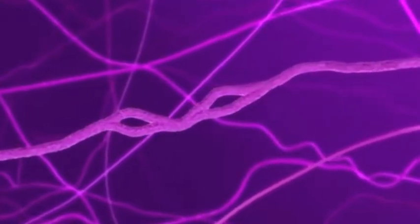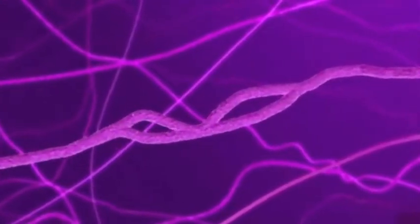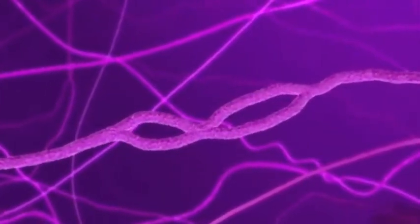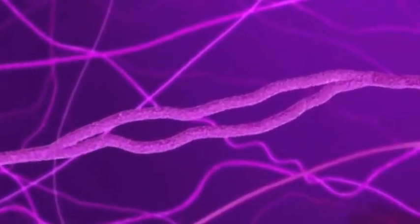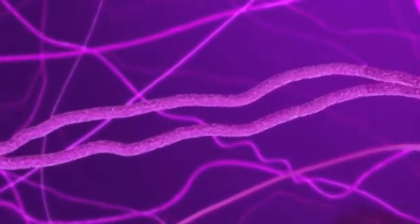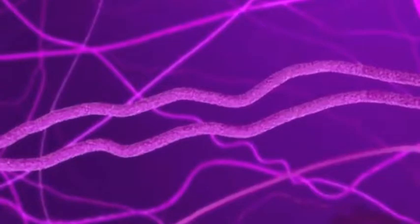During chromosome duplication, several bubbles open up along the chromosome. Each bubble grows until it merges with an adjacent bubble. Each chromosome now consists of two identical copies called sister chromatids.